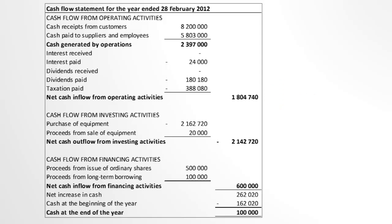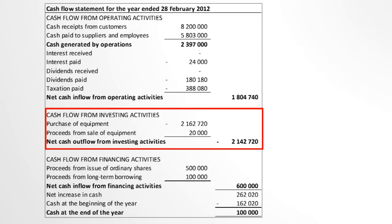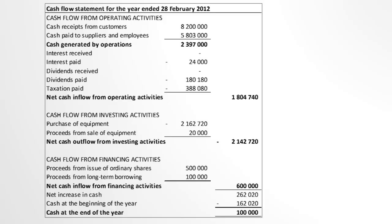For our cash flow from investing activities, we look only at cash used to purchase non-current assets like equipment as an outflow, and any proceeds we receive from selling non-current assets as an inflow. This will give us the net cash flows from investing activities. Again, if the amount is negative, it's a cash outflow; if it is positive, it's a cash inflow.